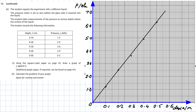Now calculate the gradient of your graph. We choose two well-separated points. Point A is at the origin, coordinates 0, 0. For point B, we use the last entry in the table, which lies on the best fitting straight line: coordinates 0.5 metres and 6.2 kilopascals. We must be careful about units when working out the gradient.